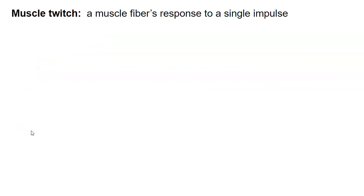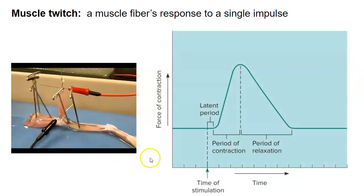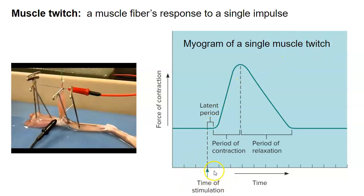So we need to know a definition for muscle twitch. A muscle twitch is a muscle fiber's response to a single impulse. Remember that a muscle fiber is one muscle cell. So if we take one muscle cell and we apply a single impulse, we can observe a muscle twitch. So in this physiology lab, this isn't a single isolated muscle fiber — this is the muscle itself. But this is an example of a myogram, which is what we're going to look at here.